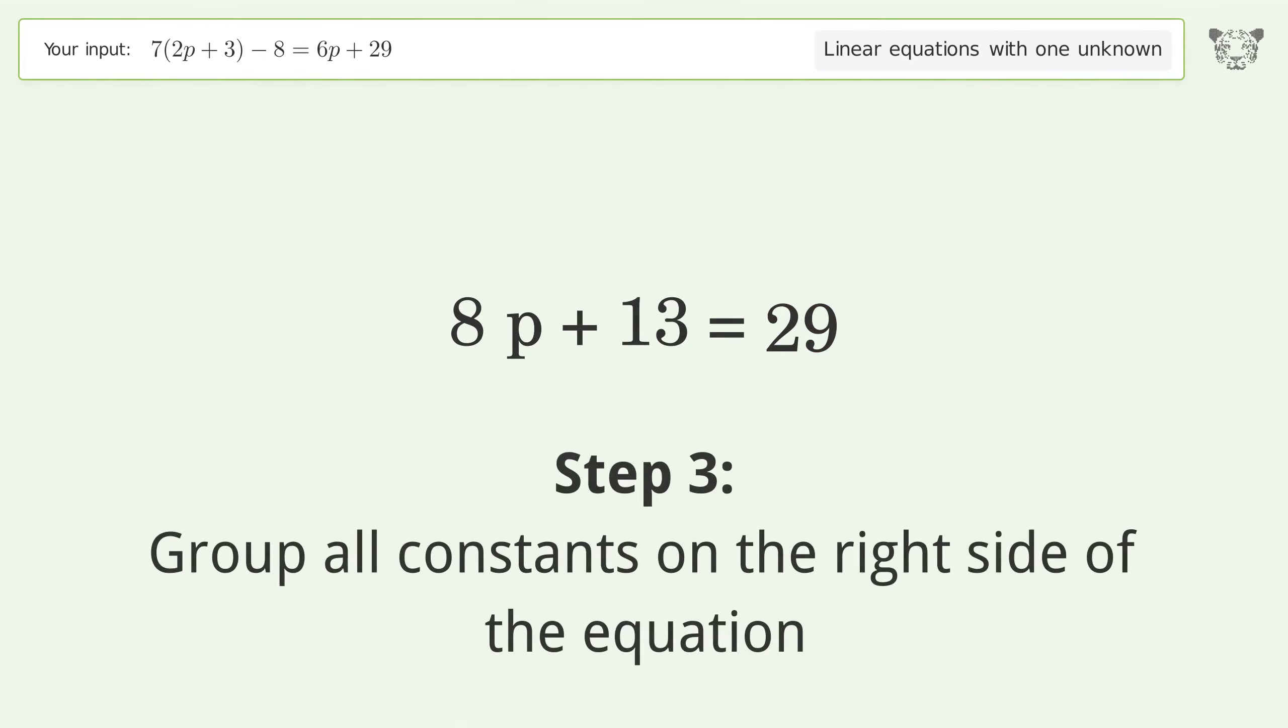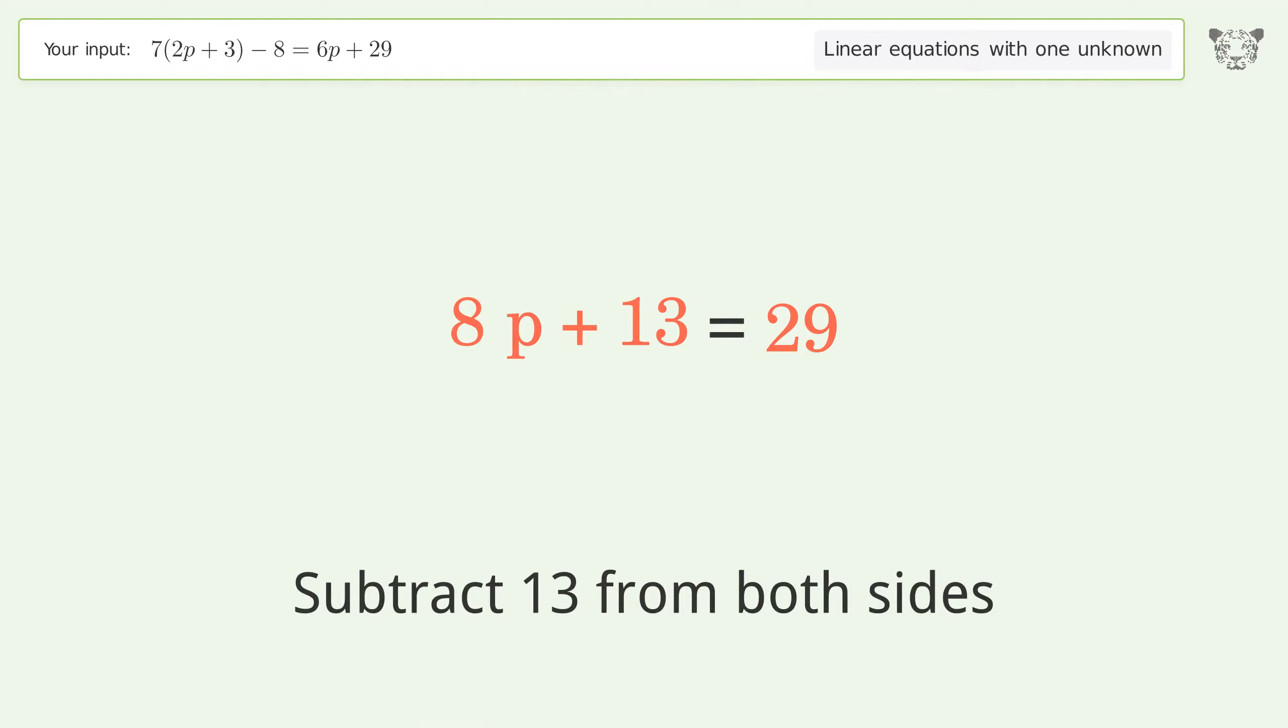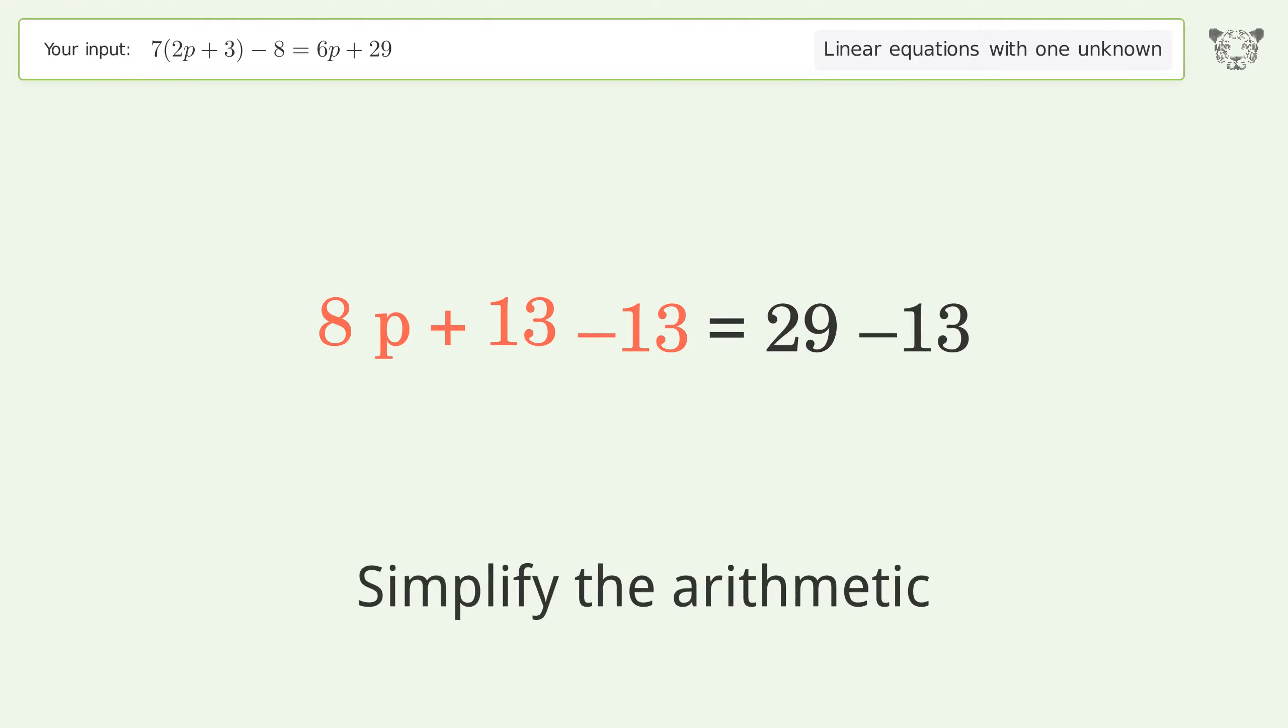Group all constants on the right side of the equation. Subtract 13 from both sides and simplify the arithmetic.